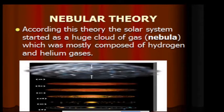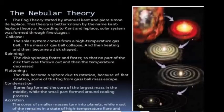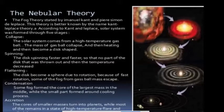The formation of the solar system is explained by the nebular hypothesis or nebular theory. It started with a huge cloud of gas mostly composed of hydrogen and helium. The steps of the nebular theory begin with collapse from the high-temperature gas cloud. Then it started spinning faster and faster so that parts of the disk were thrown out, and the temperature decreased. While decreasing, it flattened and became a sphere due to rotation. After flattening, condensation occurred — some of the gas from the core formed the largest mass in the middle, while small masses around it cooled. The small masses formed the planets, while the high-temperature center became the Sun.